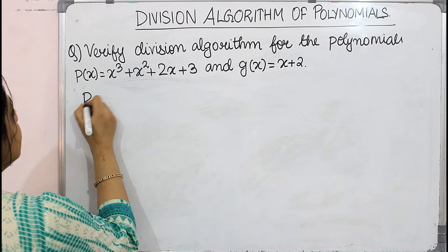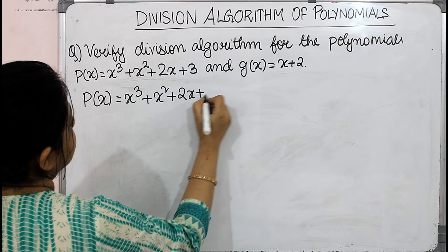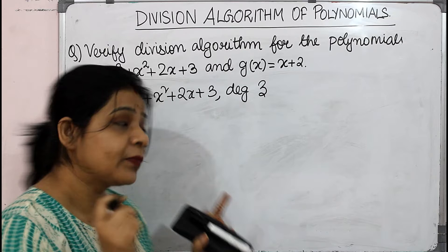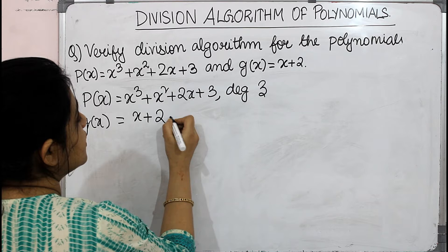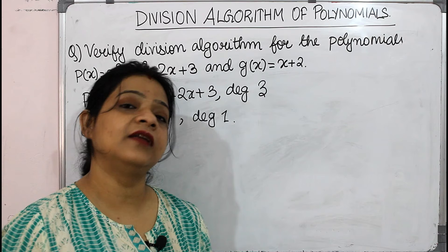Verify the division algorithm for polynomials where P(x) = x³ + x² + 2x + 3 and G(x) = x + 2. P(x) is of degree 3 because the highest exponent is 3, and G(x) is of degree 1. Evidently, the degree of P(x) is greater than that of G(x), so we can proceed to divide P(x) by G(x).